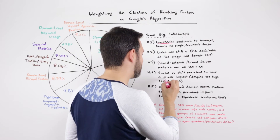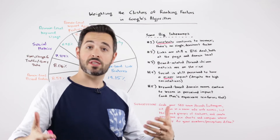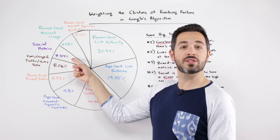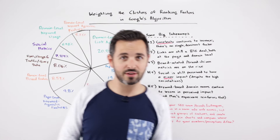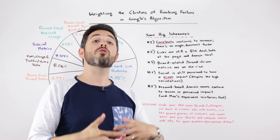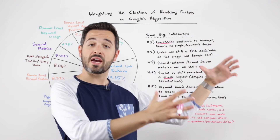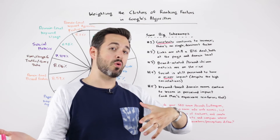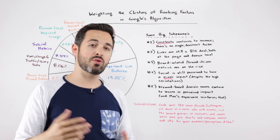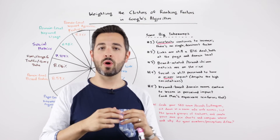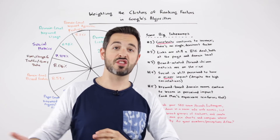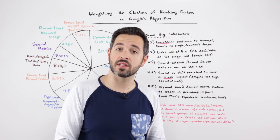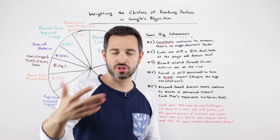Number four: social is still perceived to have a minor impact, despite some metrics to the contrary. Social got 7.24%, which is reasonably small — the third smallest factor. And yet, when we look at how social metrics correlate with things that rank highly versus things that rank poorly, we're seeing very high numbers. Numbers that, in many cases, exceed or equal the link metrics that we look at. Here at Moz, we look at those and note that correlation does not imply causation — it could be that there are other things Google's measuring that just happen to correlate nicely with social metrics like plus ones, shares, and tweets.